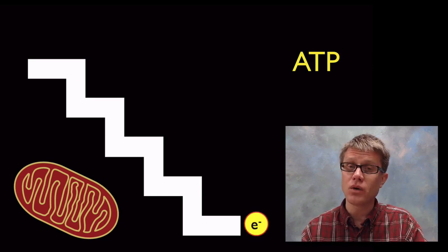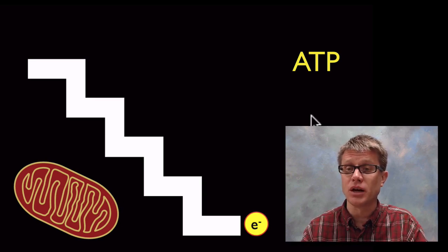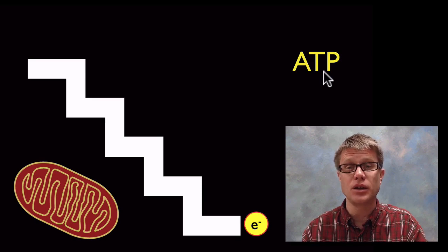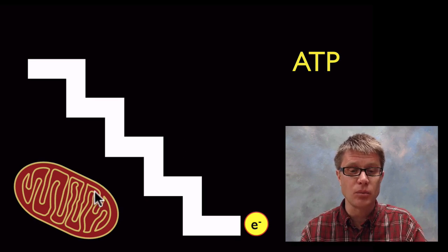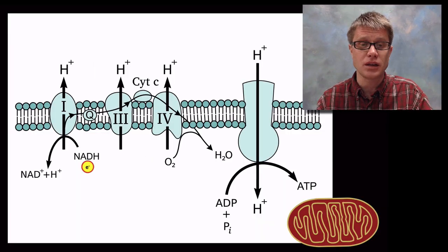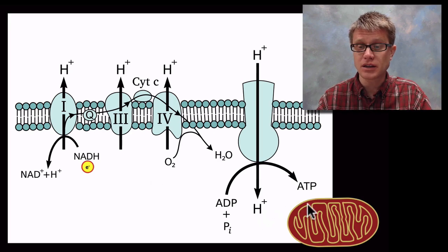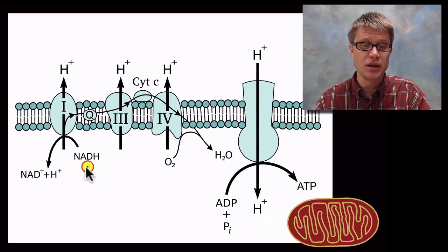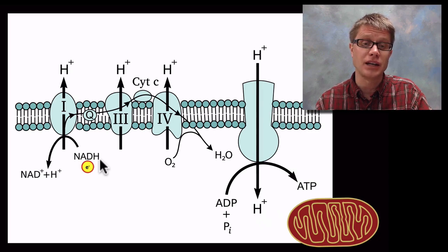Instead of releasing all the energy at once, we release it in small bits and use that to form ATP. ATP stores some of that potential energy. This occurs on the inner membrane of the mitochondria, which is folded over and over again to increase surface area. The electrons are transported by a carrier molecule called NADH.